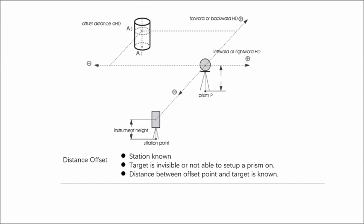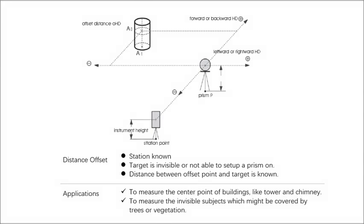This function is widely used to measure the coordinate of buildings like water tower, signal tower, and chimney. It is also used for the measurement of invisible subjects which might be covered by trees or vegetation.